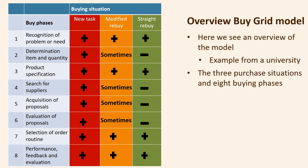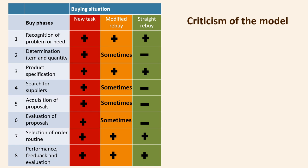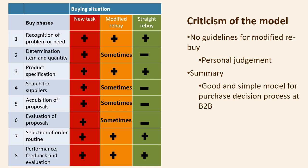Here we see an overview of the three purchase situations and phases, as you will often see in textbooks — with an explanation of the pluses, minuses, and the 'sometimes' scenarios when there are uncertainties and decisions to be made prior to initiating the purchase process. The model may be criticized when considering a modified rebuy, as there are no guidelines for when it is modified, when it is not, and when it turns into a straight rebuy — this is a matter of personal judgment. In summary, the BuyGrid framework is a good and straightforward model for working with the purchase decision process at a B2B level where companies trade with one another.